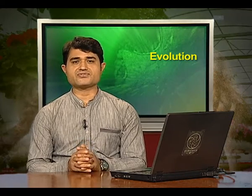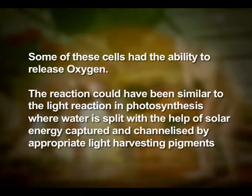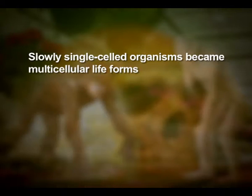About 2000 million years ago, the first cellular forms of life appeared on earth. The mechanism of how non-cellular aggregates of giant macromolecules could evolve into cells with membranes is not known. Some of these early cells had the ability to release oxygen, possibly through a reaction similar to the light reaction in photosynthesis, where water is split using solar energy captured by light-harvesting pigments. Slowly, single-celled organisms became multicellular life forms.